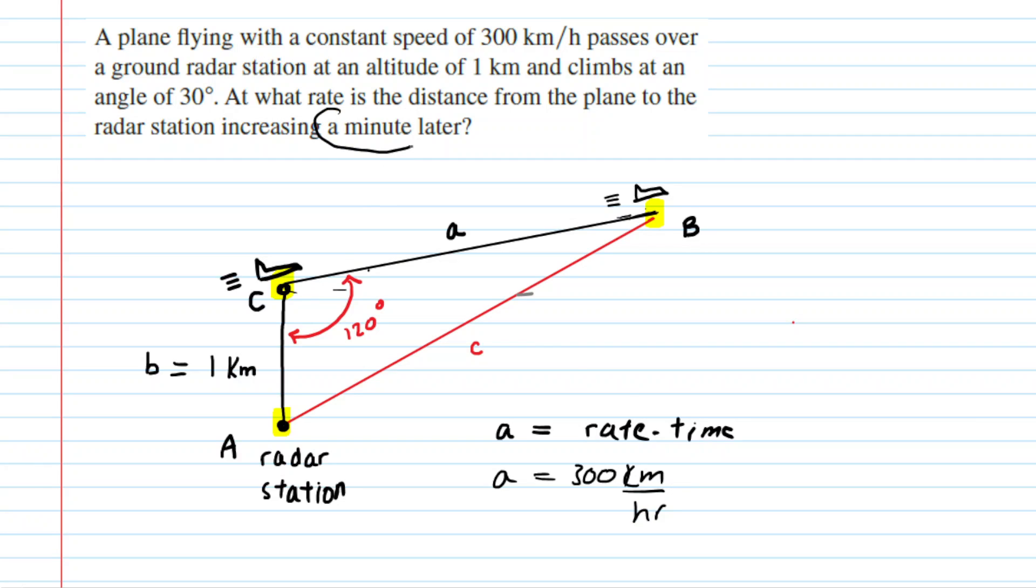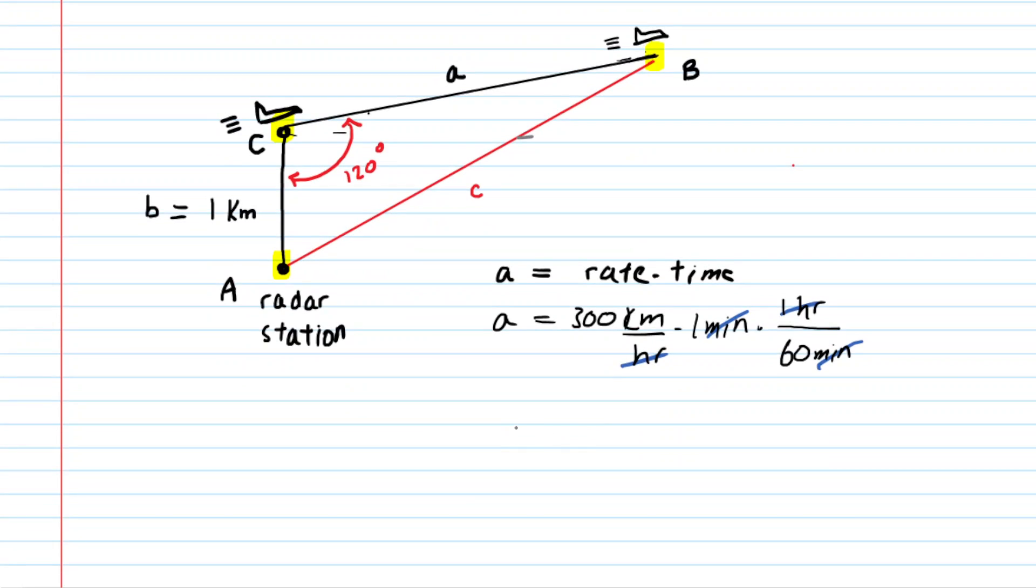The time is one minute. We know that it took a minute to go from point C to point B, so we will multiply this by one minute. But be careful, because the hours and the minutes will not cancel here. We need a unit conversion. We all know that one hour is 60 minutes, and if we multiply by that unit conversion, the hours will cancel as will the minutes. So we'll basically have 300 divided by 60, and when we work that out, we can see that a is going to equal five kilometers. So let's label that on our diagram as well.